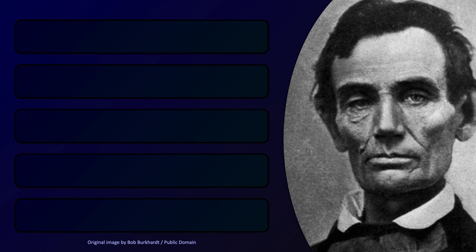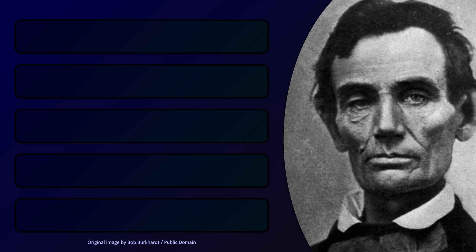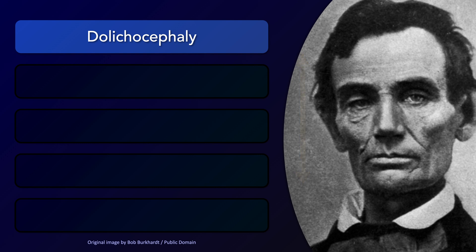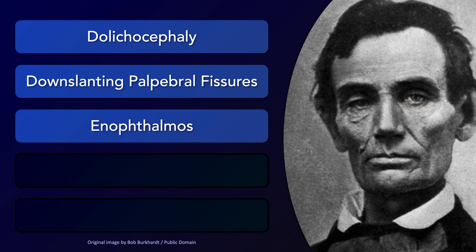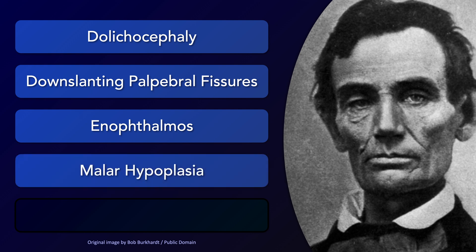The typical facial features of Marfan syndrome include dolichocephaly, essentially meaning an elongated face — more accurately, a face that is longer than expected relative to the width of the head. Down-slanting palpebral fissures, which in this case is not particularly evident. Enophthalmos, that is deep-set eyes, as seen in this image. And malar hypoplasia, meaning flat cheekbones.